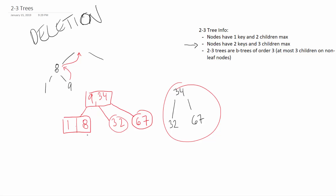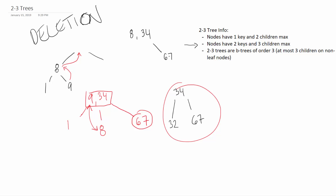Let's do one more — what happens if we delete 32? We take it out, then split 1 and 8. Notice that the middle subtree is not between 9 and 34 anymore — it's actually less than 9 — so we switch things up. Our new tree ends up with 8 and 34 as the root keys, 1 on the far left, 9 wedged in the middle between 8 and 34, and 67 on the far right. That satisfies the rules — that is a valid 2-3 tree.